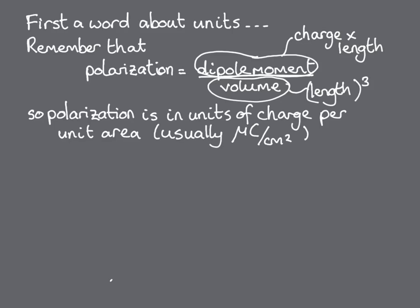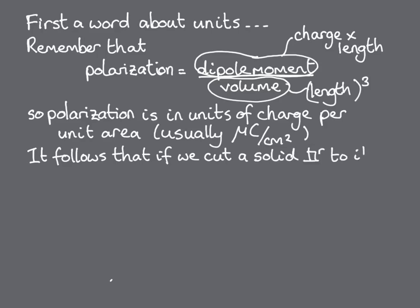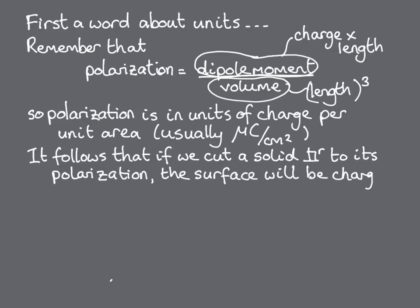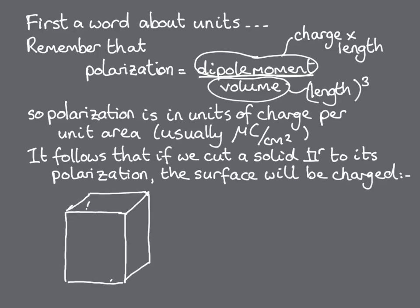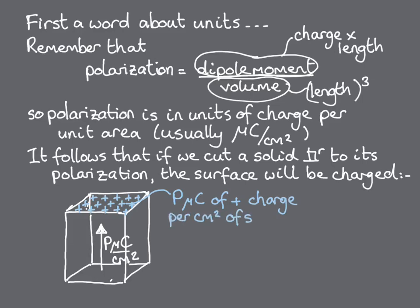Usually we report ferroelectric polarisations in microcoulombs per square centimetre, because this gives us nice numbers. The units make it clear that if we cut a solid perpendicular to its polarisation, the surface that the polarisation points away from will have a charge of minus p microcoulombs per square centimetre, and the opposite surface will have a charge of plus p microcoulombs per square centimetre.